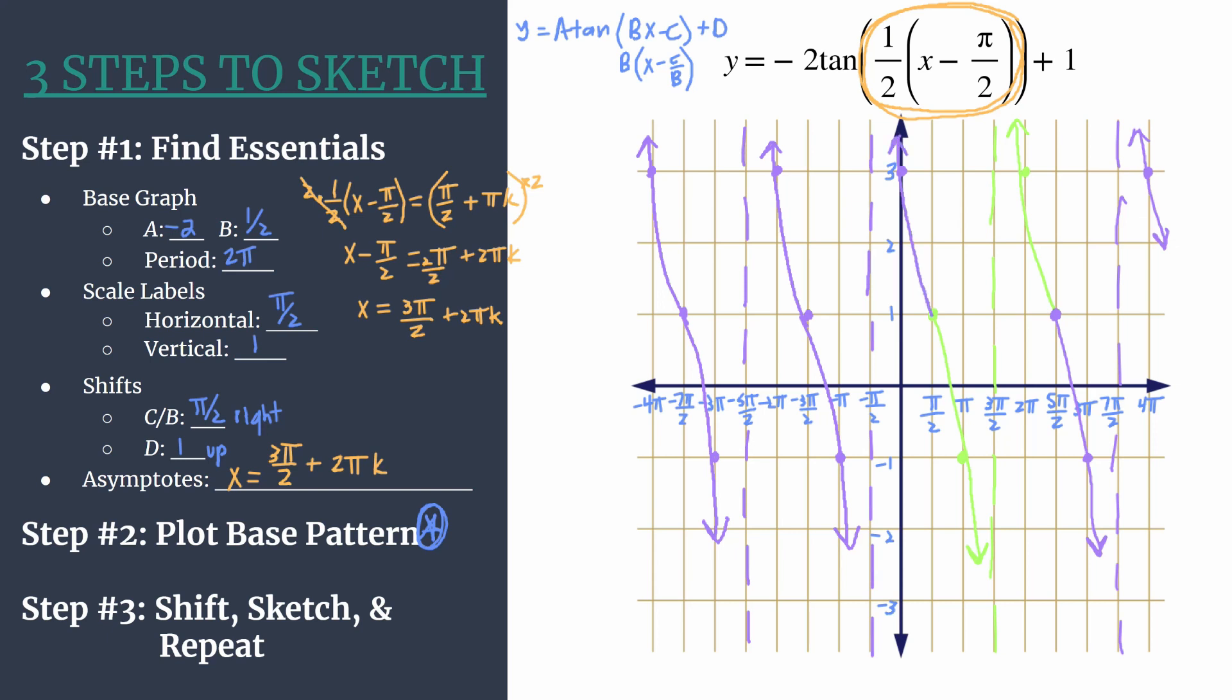And there you have it. So a couple of things just for emphasis. We said that our asymptotes happened here when k was 0, here when k is 1. So you would get, if you let k be 2, you get the next one to the right, which would go off of our grid. We had k equal to negative 1, k equal to negative 2. So hopefully that helps you really understand better how the asymptotes equation works to generate your asymptotes for your graph.